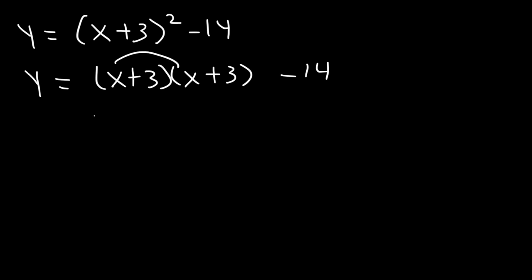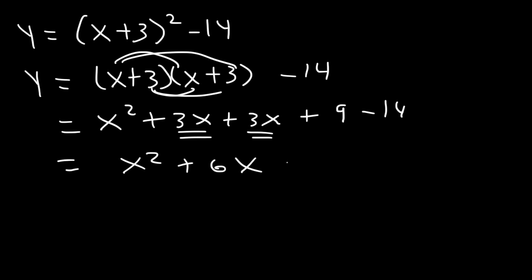Let's FOIL it. x times x is x squared. x times 3 is 3x. 3 times x is 3x. 3 times 3 is 9. And then combine like terms. 3x plus 3x is 6x. 9 minus 14 is negative 5. So this gives us the original function in standard form.